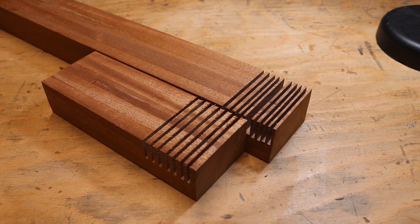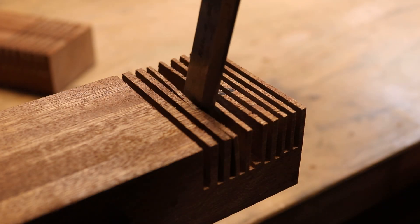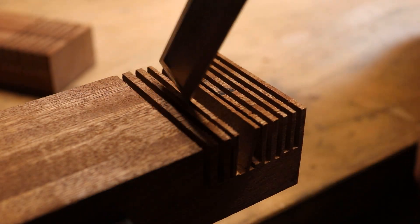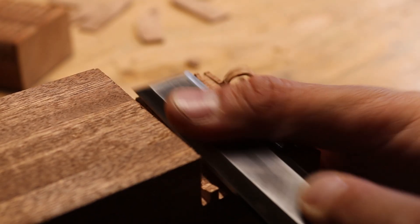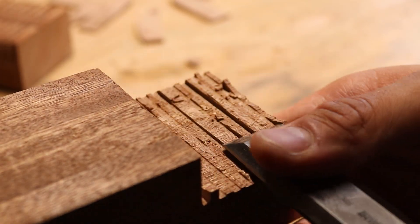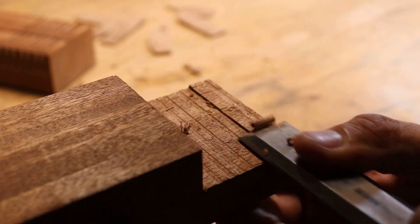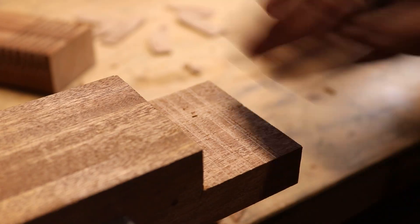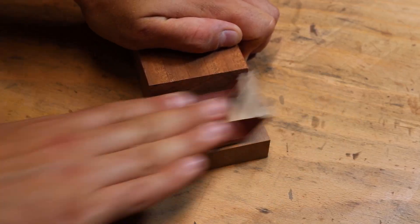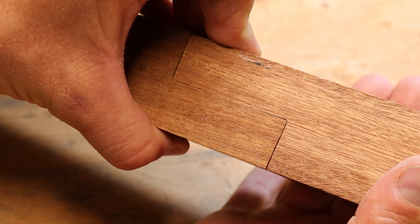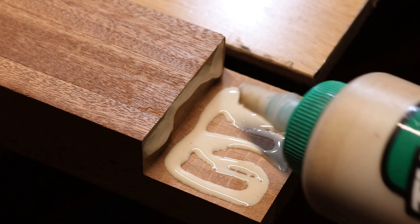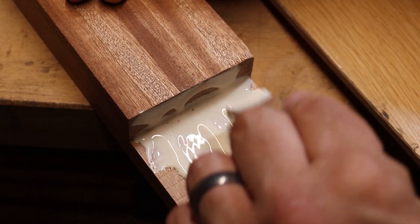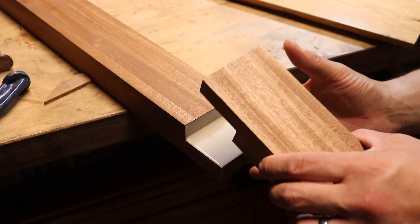Once all the slots are cut I use a chisel to remove the excess material and then clean up the mating surfaces before joining. Definitely not my prettiest joinery but it will do the job for this. I apply a generous amount of glue before clamping up and leaving overnight to dry.